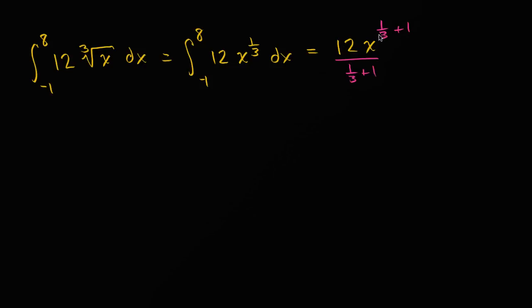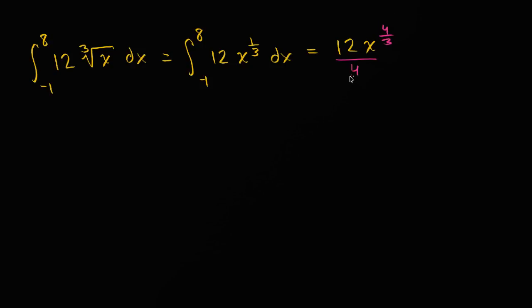What is 1/3 plus one? Well, that's 4/3 — 1/3 plus 3/3 equals 4/3. So we can write this as x to the 4/3 divided by 4/3.